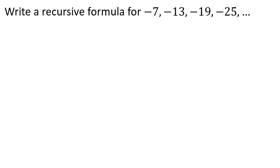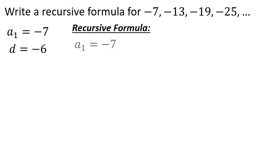Consider this arithmetic sequence, which we want to write in recursive form. All you need to know is the first term and the common difference. The first term is a sub 1 equal to negative 7, and the common difference is d equal to negative 6. So the recursive formula is: a sub 1 is equal to negative 7, and a sub n is equal to a sub (n minus 1) minus 6. The main problem with recursively defined sequences is that you have to know the previous number to find the next one, so you can't find the 15th number without the 14th. We would prefer sequences defined explicitly.